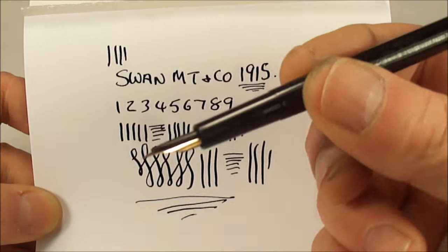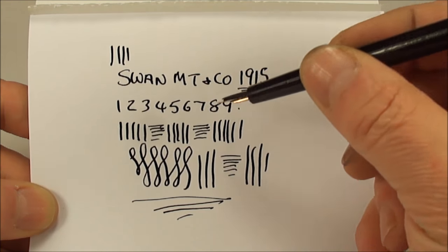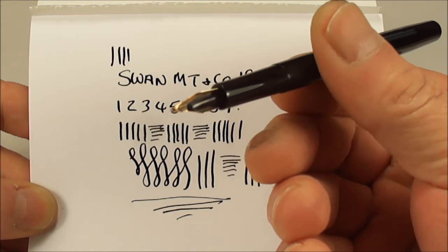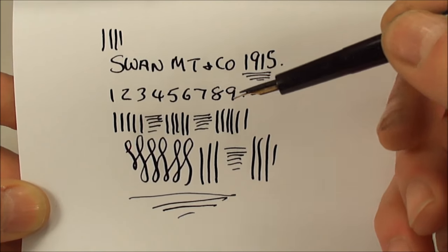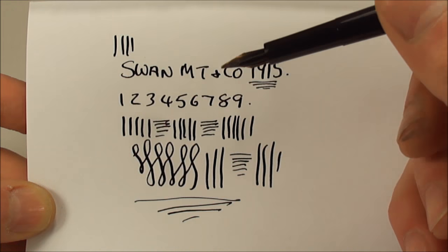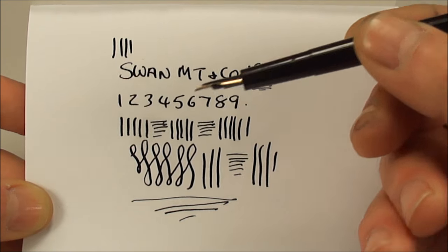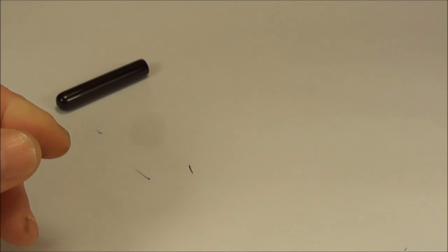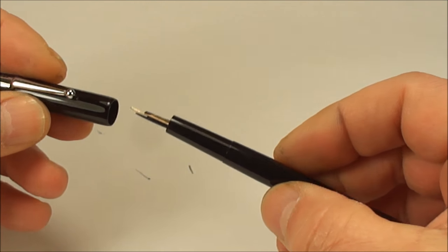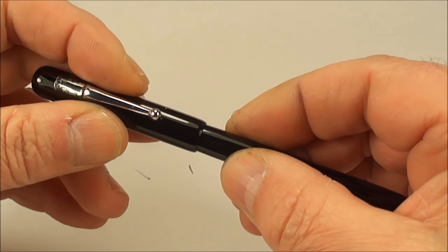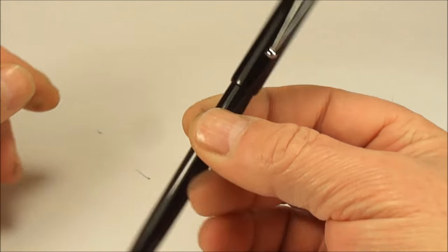There you can see on the downward stroke we're getting a lovely line. But all in all, for a hundred year old pen, absolutely superb. Oh I love it. It actually puts some of the modern pens to shame. It writes absolutely gorgeous, lovely writer, a little bit of flexibility in the nib, and for an eyedropper fountain pen, absolutely superb.